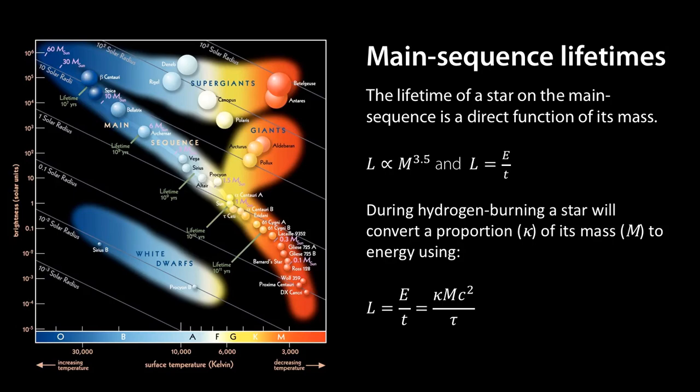But instead of just M we'll use a proportion of the mass which has been converted to energy. So kappa M c squared over tau where tau is the lifetime of the star. Okay, so the total energy conversion is kappa mc squared over tau, the lifetime of the star.